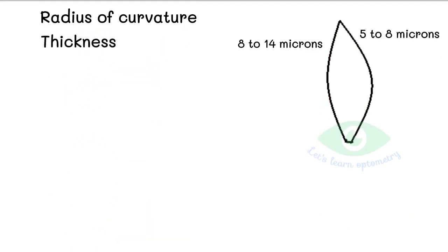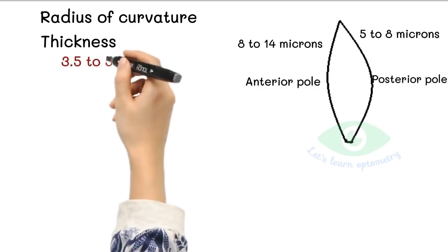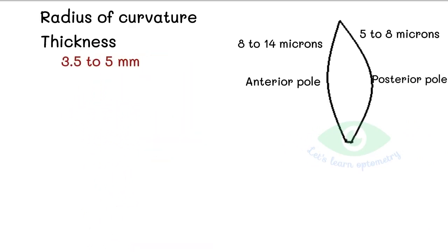Thickness: The centers of the anterior and posterior surfaces are called the poles and the lens thickness is the distance from the anterior to the posterior pole. The thickness of the unaccommodated lens is 3.5 to 5 mm and it increases 0.02 mm each year throughout life.